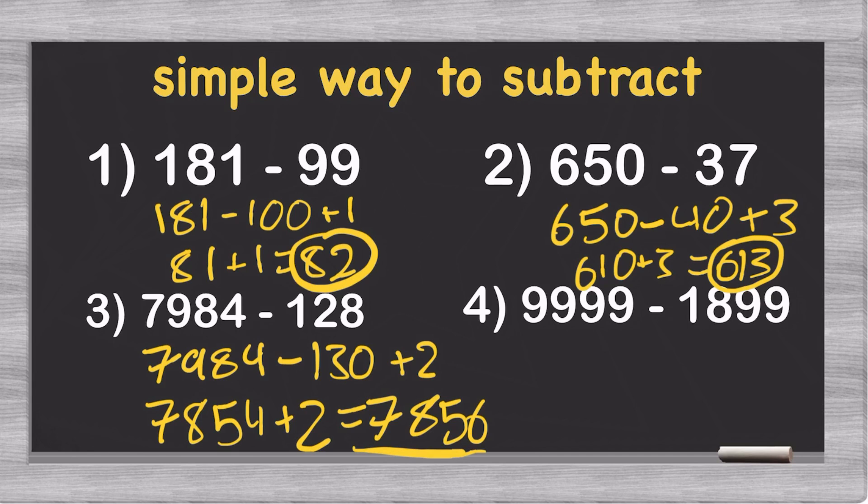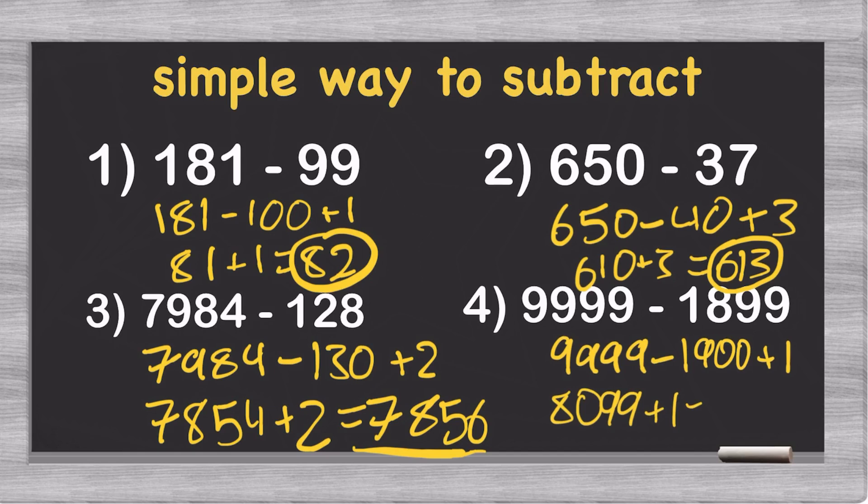And finally, we can get to 9999 minus 1899. And even for this one, you follow the same exact trick. Just do this. And when you do this, you can see that you get 8099 plus 1, which is equal to 8100. And 8100 is, once again, your answer.